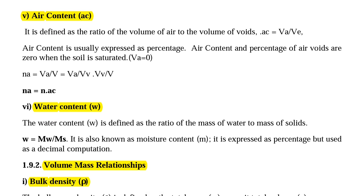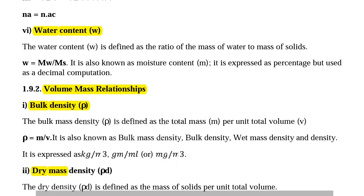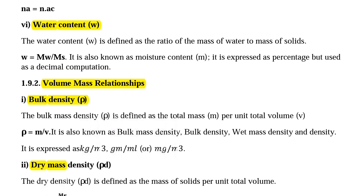Air content is always less than Na. Next we are going to see water content. Water content W is defined as the ratio of mass of water to mass of solids: W equal to Mw divided by Ms. It is also known as moisture content. It is always expressed in terms of percentage, but it is used as a decimal for computations.